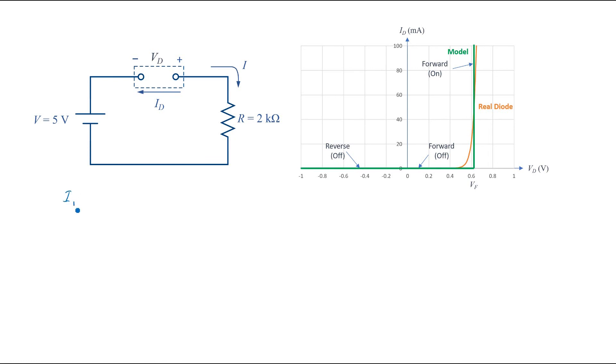So we can write the diode current, which we always assume from anode to cathode. And in this case, in the opposite direction of I or minus I, is equal to 0.